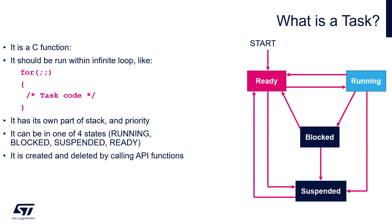Each task has its own stack and its priority. In fact, it has a stack area and a so-called TCB — Task Control Block — which contains its main configuration and parameters like current state, priority, and connections to other OS components.